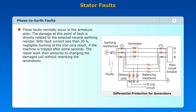The damage at the point of fault is directly related to the selected neutral earthing resistor. With fault current less than 20 amperes, negligible burning of the iron core results if the machine is tripped after some seconds. The repair work then amounts to changing the damaged coil without restriking the laminations.